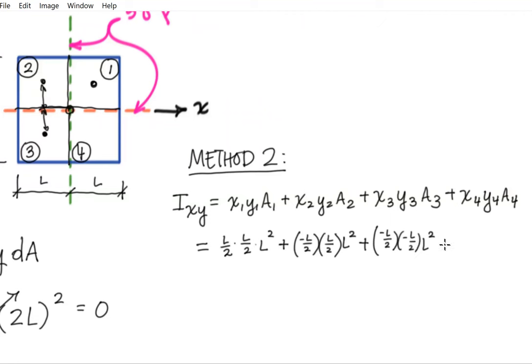And finally, my last term, area 4, of course, has the same area L squared. To get there, I want to go positive L over 2 in the X direction and minus L over 2 in the Y direction. So L over 2 and minus L over 2.